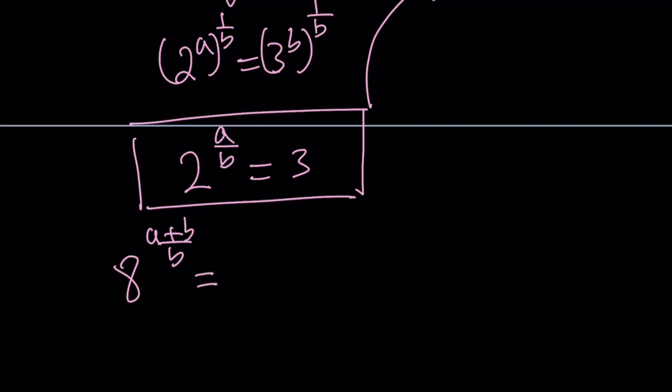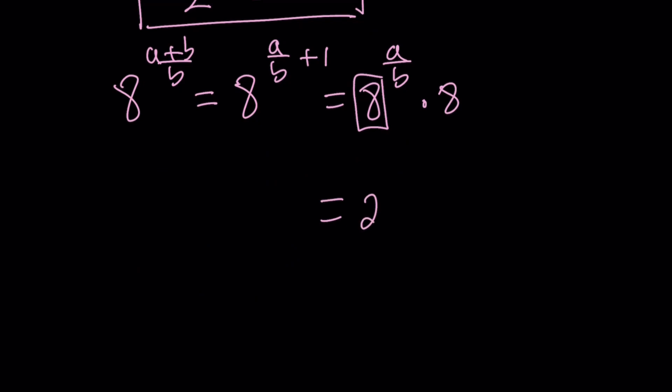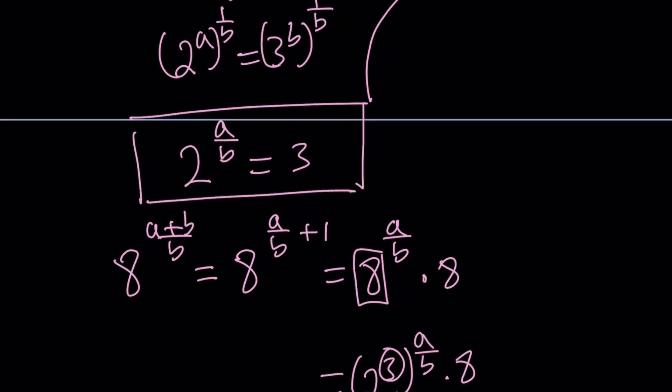8 to the power a plus b over b. Now, this fraction can be broken down into the sum of two fractions because of the numerator. So we can write this as 8 to the power a over b plus b over b, which is 1. And then it becomes 8 to the power a over b times 8 to the power 1, which is 8. Now, how am I going to associate it with 2 to the power a over b? Well, 8 is just 2 to the third power. So we can write it as 2 to the third to the power a over b times 8. We can switch these around because they're multiplied.